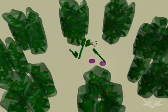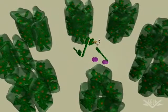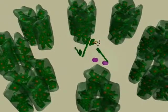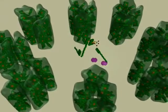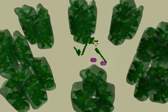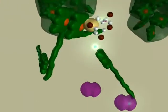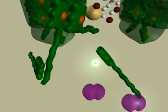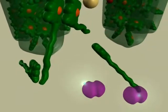Since QB needs two electrons to become mobile, a second photon of light is required. The resonance energy is again transferred to the reaction center. An electron is lost from P680 and transferred via QA to the QB, which already contains one electron.